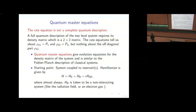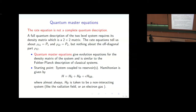The bath is always a non-interacting system, described by a quadratic Hamiltonian. It could be a radiation field or an electron gas when considering transport across a molecule. The system itself can have interactions and can be quite complicated, but the bath is always non-interacting.